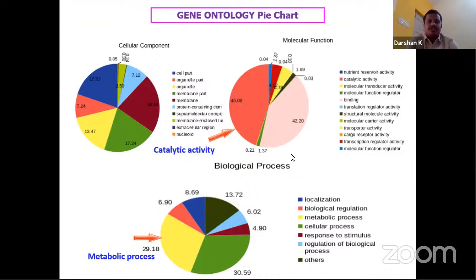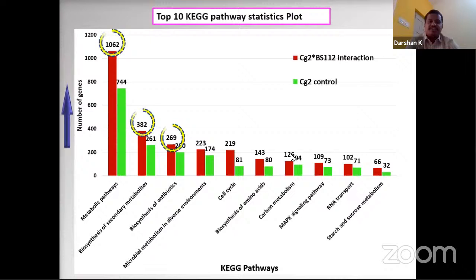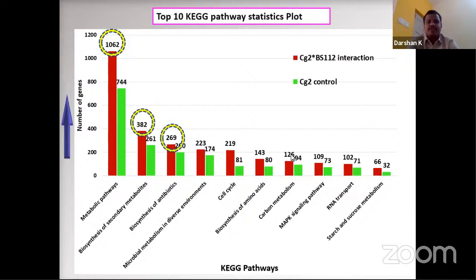Gene Ontology categorization across cellular component, molecular function, and biological process showed that 45% of genes are involved in catalytic activity and around 29% in metabolic processes. KEGG pathway analysis showed that the number of genes associated with metabolic pathways significantly increased to around 1,062 in the interaction compared to around 744 in the control. Biosynthesis of secondary metabolites and antibiotics were significantly increased in the interaction.